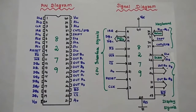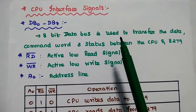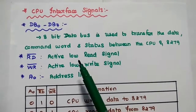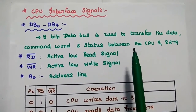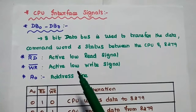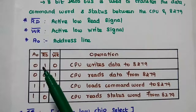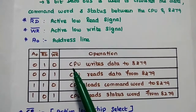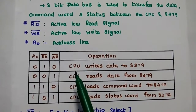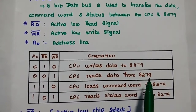This is the pin diagram and signal diagram of 8279. Let's discuss each signal in detail. The first CPU interface signal is DB0 to DB7 — an 8-bit data bus used to transfer data, command word, and status information between the CPU and the 8279. Next are read bar and write bar, both active low signals. A0 is the address line from the processor. These three bits — A0, read bar, write bar — define the operation of the 8279. The combination 010 means the CPU writes data to 8279; 001 means CPU reads data from 8279.